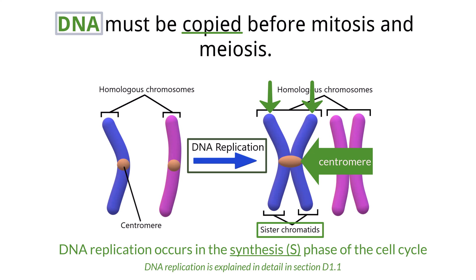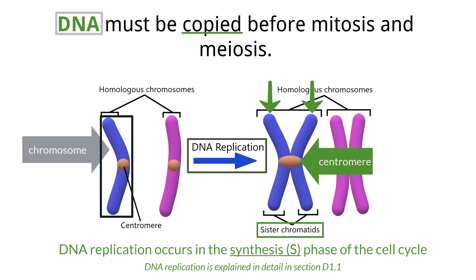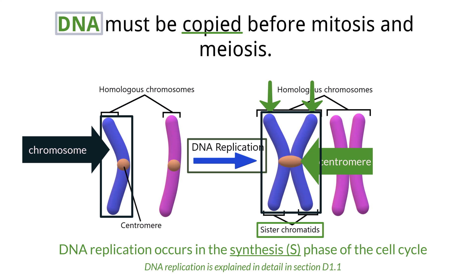Do not be confused by the terminology. A chromosome is one double-stranded DNA molecule — humans have 46, or 23 pairs. During the S phase of the cell cycle, the chromosomes replicate. Whenever you see the familiar X shape of a chromosome, remember that this occurs during DNA replication, and you are seeing the two sister chromatids connected at the centromere.